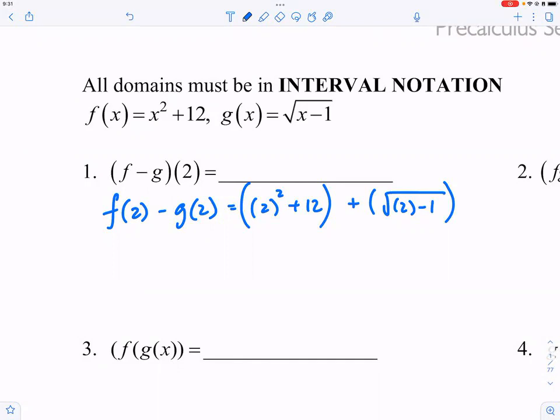But if you write down parentheses two, then everyone knows where the two came from. It's from the substitution here on the left. So then you show your work and say four plus twelve plus square root of two minus one, which is one.